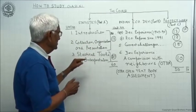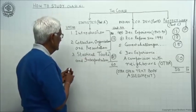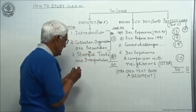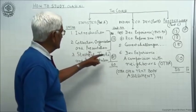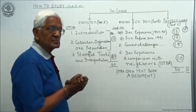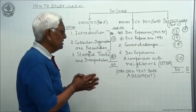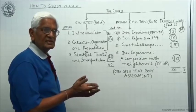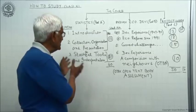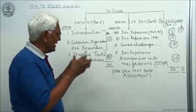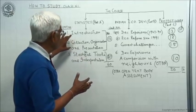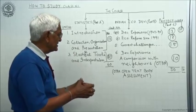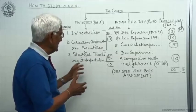The third unit in Statistics is Statistical Tools and Interpretation. In this unit we will study averages — mean, median, mode — index numbers, and correlation. We learn the various methods by which we summarize what we have collected and presented, turning them into meaningful results so that we can interpret the significance of those results.